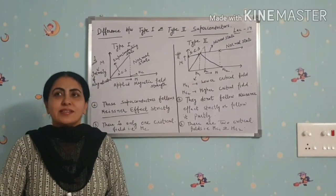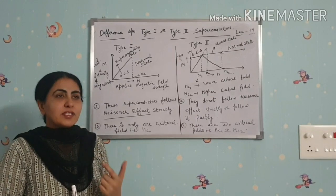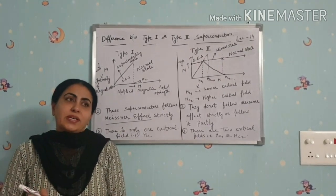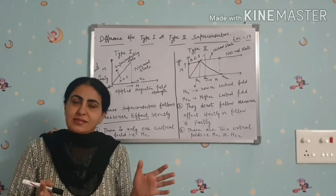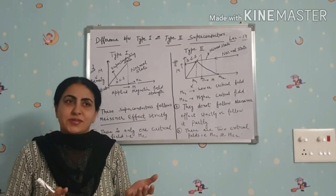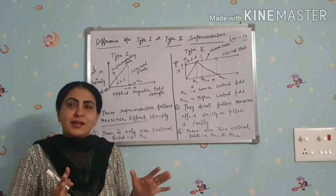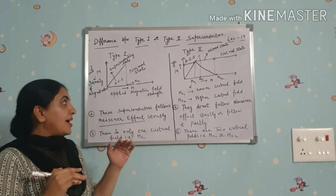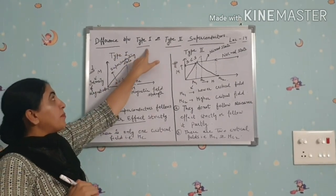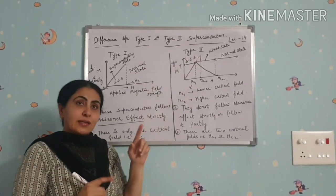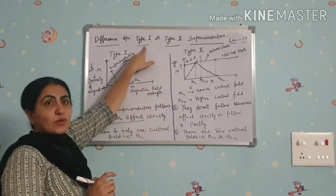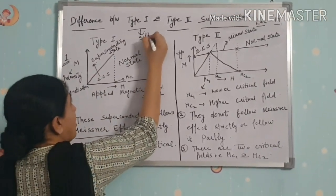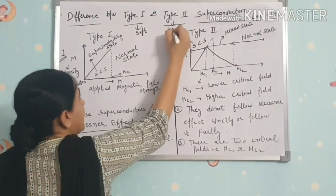Today we are going to discuss a very important topic: the difference between two types of superconductors, that is Type 1 and Type 2. This is a very important topic for BSc, MSc, and even engineering students. Type 1 is also called a soft superconductor, and Type 2 is called a hard superconductor.